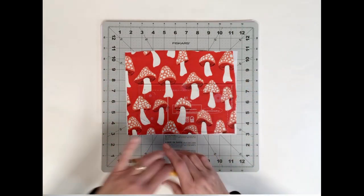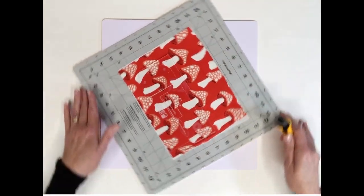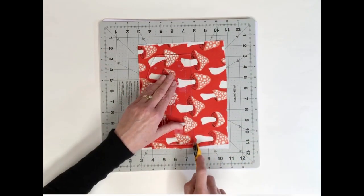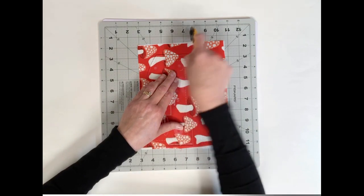My cutting mat rotates 360 degrees making it much easier to cut out my template with my rotary cutter. I can turn it as I need it without shifting the fabric or the template.